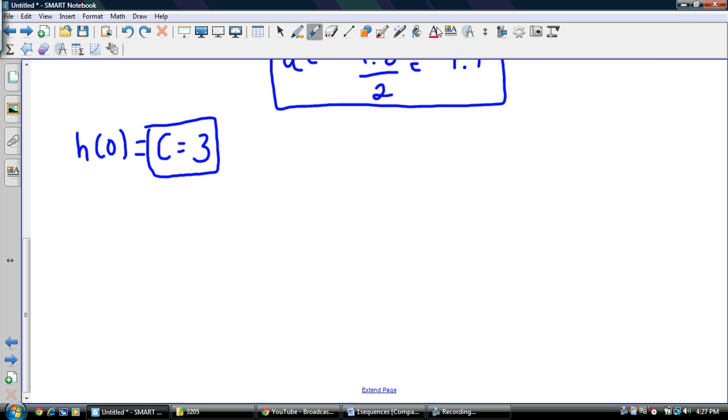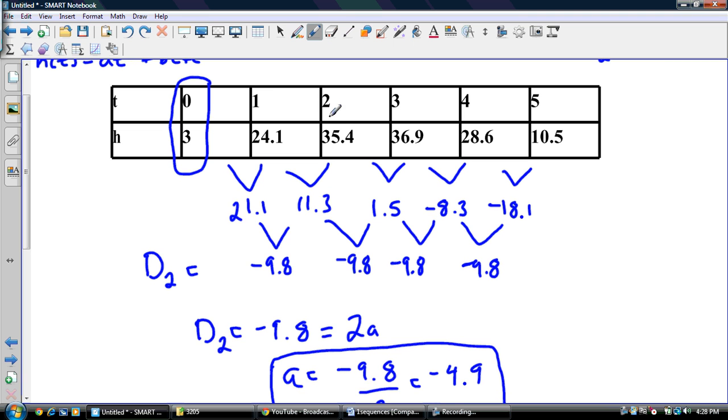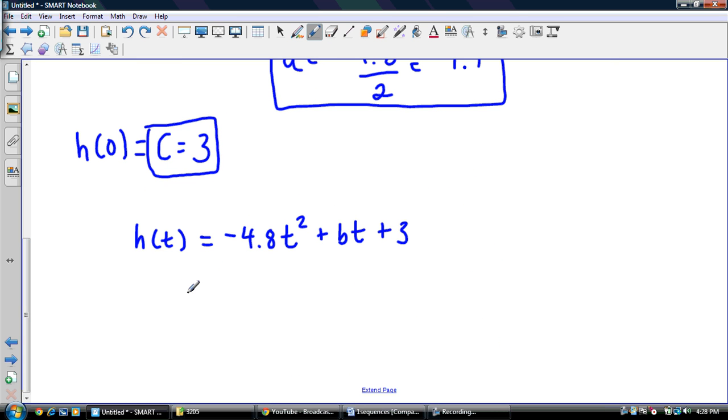So now what we can do is actually take our h(t) and sub in what we know. So we know it's negative 4.8t squared. I don't know what B is yet, so Bt plus 3, my C value. So now what I'm going to do is I'm going to pick a point that's easy to use. I'll probably pick this guy, 1 at 24.1, so T is 1. So my h(t) is 24.1. That's going to be equal to negative 4.8 times 1 squared plus B times 1 plus C. So the only guy that we don't know here is B.